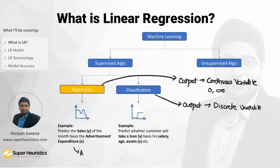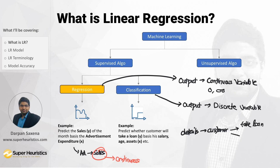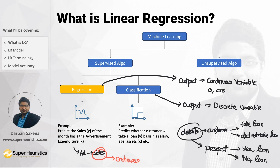For example, if I share advertisement expenditures and want to know how much sales I'll make, sales can be 1 crore, 1.5 crores, 3.51 crores — it can be anything, so sales is a continuous variable and this is a regression problem. For classification, suppose you work at a bank and know which historic customers took a loan and which did not. You want the algorithm to predict for a new prospect whether they will take a loan or not — the output is only yes or no, which is discrete, so this falls under classification.